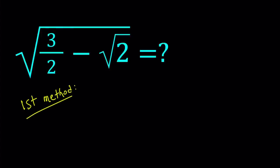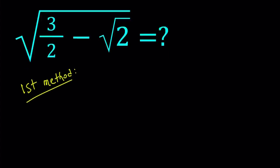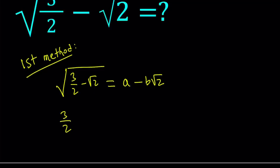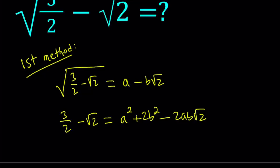For the first method, I'm going to set this expression equal to a minus b√2, where a and b are rational numbers. Square both sides. On the right-hand side, we get a² plus 2b² minus 2ab√2, if you expand the (x minus y)² quantity.